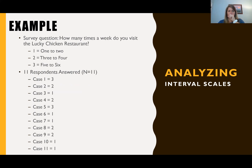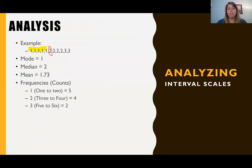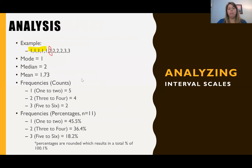So what does this look like in an example? If you have the survey question, how many times a week do you visit the Lucky Chicken restaurant — one to two, three to four, five to six — and you have 11 respondents who answered, these are their answers, giving us a sample size of 11. When we do the analysis and put all of the data in order, we find a mode of one, a median of two because it's right in the middle, and if you add all these up and divide by 11, you get a mean of 1.73. For frequencies, five people answered one to two times a week, four people answered three to four times a week, and two people answered five to six times a week. In percentages, 45.5% of patrons visit one to two times per week, and only about 18% visit five to six times a week.